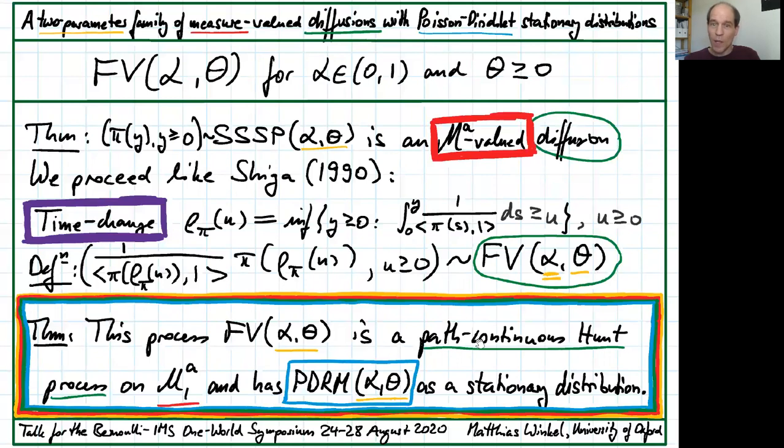For these diffusions we establish them as path-continuous Hunt processes in the space of purely atomic probability measures. For these diffusions we show that they have the Poisson-Dirichlet random measure with parameters alpha and theta as their stationary distribution.